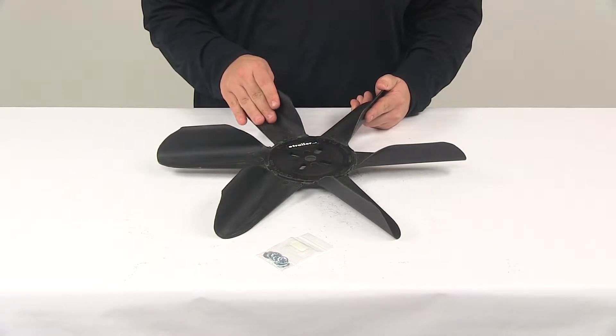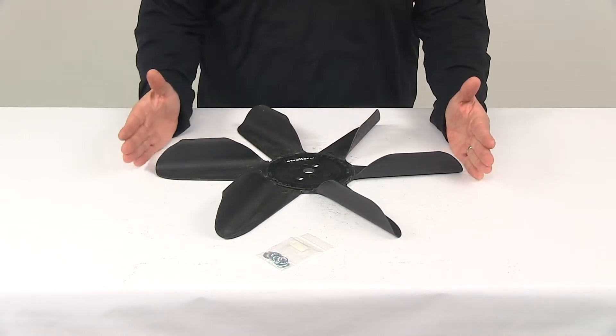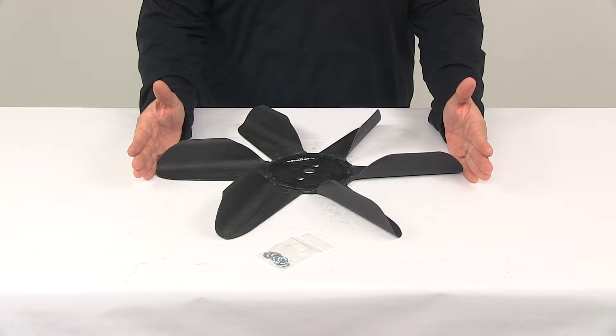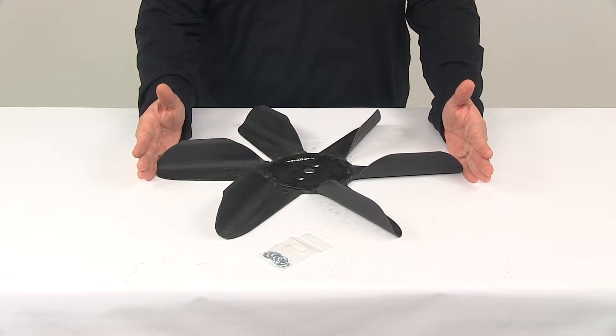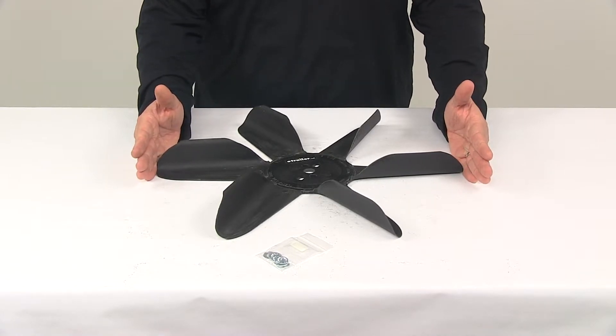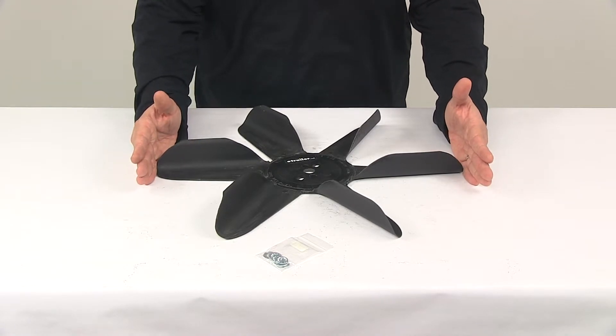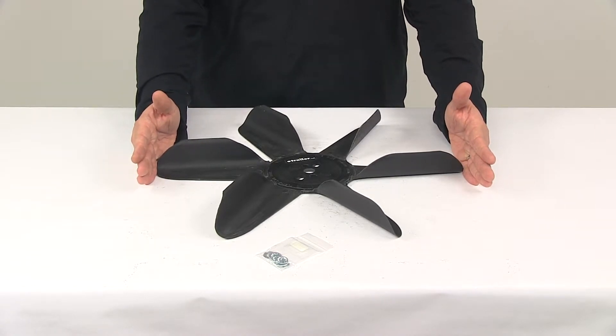It features standard rotation. The fan diameter edge to edge is 18 and 3/8 inches, so it's in the 18 inch diameter category. To be exact, the overall diameter is 18 and 3/8 inches.